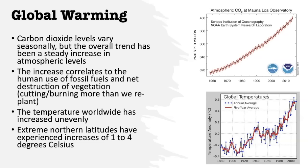Ultimately the result of all these greenhouse gases is global warming, and this is what we are seriously concerned about because of the changes we are seeing globally in climate. The whole planet is not warming equally — we are seeing various changes depending on where you're located. If you look at the graph on the top right, carbon dioxide levels vary seasonally, but overall we see an upward trend. The reason you see that red line zigzagging up and down is that plants are more productive during certain times of year and take more CO2 out of the atmosphere, but the general trend at Mauna Loa Observatory in Hawaii shows CO2 still increasing over time.